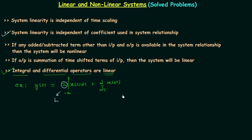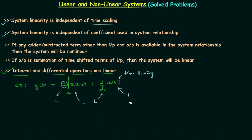In the second term we have d/dt of x(t²). Here t² means there is time scaling, and from the first property, system linearity is independent of time scaling — so this also gives a linear result. Using the fifth property, the integral operator gives a linear result and the differential operator also gives a linear result. All operations performed by the system give the same linear result, therefore the system is a linear system.